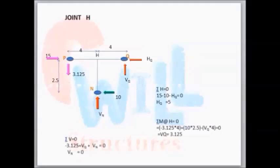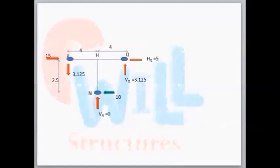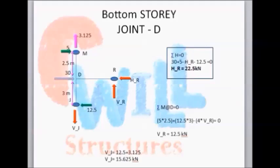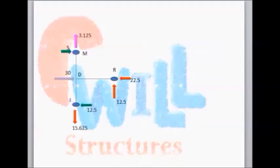Similarly to joint G, solve the other joints for the first story: H and I. Have a look at the solution. Here the complete solution is solved for the first story — all shear forces and axial forces are calculated for each beam and each column. Similarly, solve the bottom story joints A, B, and C with the same procedure, also calculating the moment at the base. The moment is equal to force multiplied by perpendicular distance.